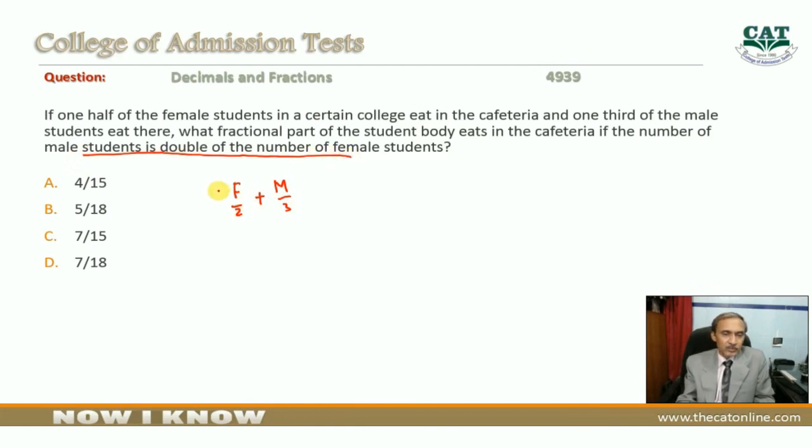We need to find the part over whole - the total number who eat in the cafeteria divided by the total students. So we have (male plus female who eat) divided by total F plus M.